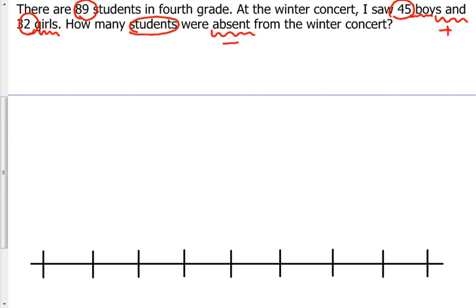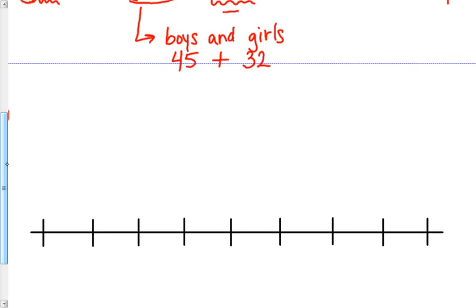I need to know how many students were there first, so we need to add the boys and girls. There were 45 boys and 32 girls. I'm going to use a strategy you're all familiar with. We're not going to use the open number line here because this is quick to do with mental math. Five plus two is seven, four plus three is seven, so there were 77 students.